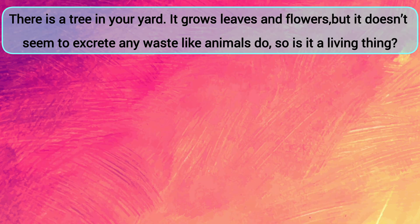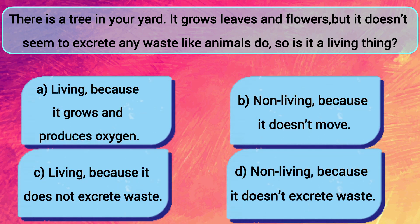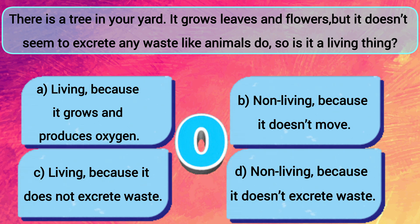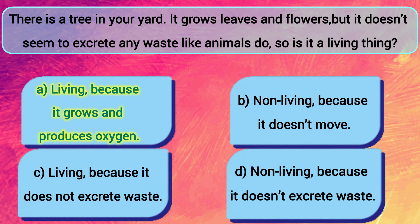There is a tree in your yard. It grows leaves and flowers, but it doesn't seem to excrete any waste like animals do. So is it a living thing? A: Living because it grows and produces oxygen. B: Non-living because it doesn't move. C: Living because it does not excrete waste. D: Non-living because it doesn't excrete waste. The answer is A — living because it grows and produces oxygen.